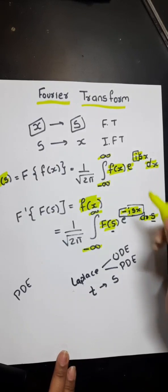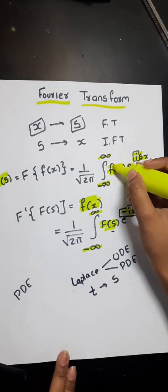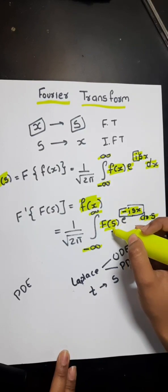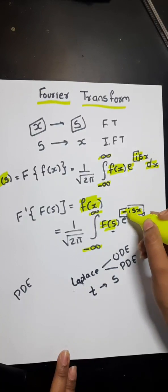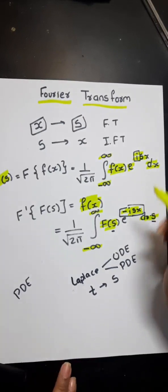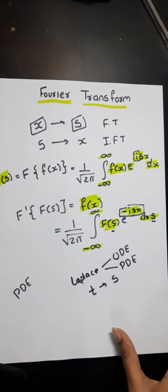There is only one difference in this formula, that instead of f of x, it is f of capital S. And over here, instead of plus iota, minus iota. There are just minor differences there.